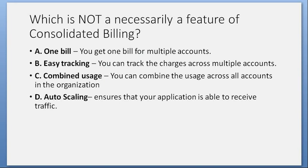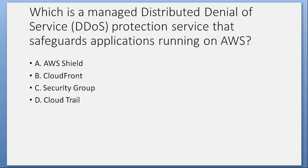Which is not necessarily a feature of consolidated billing? A. One bill — you get one bill for multiple accounts. B. Easy tracking — you can track charges across multiple accounts. C. Combined usage — you can combine the usage across all accounts in the organization. D. Autoscaling — ensures that your application is able to receive traffic. Answer: D. Autoscaling. It's not a consolidated billing feature.